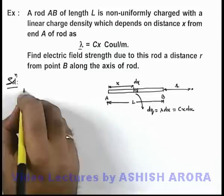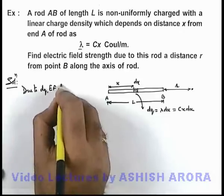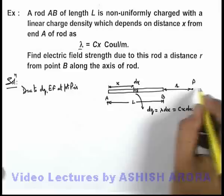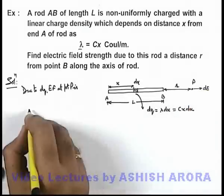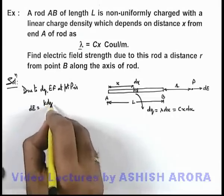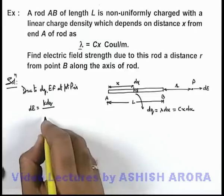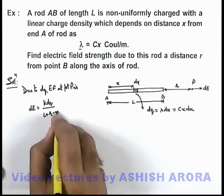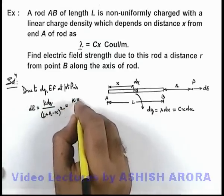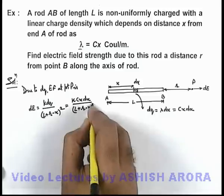Due to dq, the electric field at point P — call it dE — can be given by the result for a point charge: dE = k·dq / (distance)². The distance from point P to the element dq is (l + r − x), so dE = k·cx·dx / (l + r − x)².